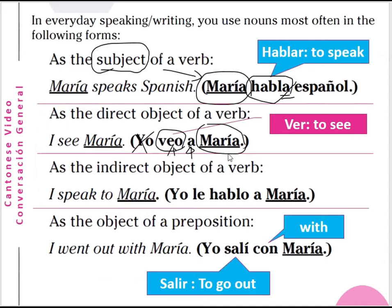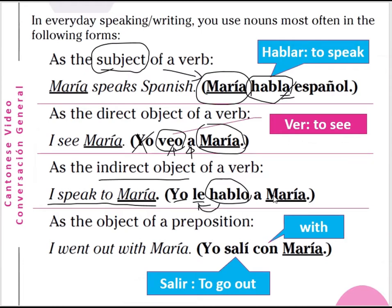As the indirect object: 'I speak to María' — María is the indirect object. Yo le hablo a María. Le here means her or him. Yo is I — I speak to her, but who is she? She is María. In Spanish you can say yo le hablo and omit a María. But if you want to emphasize that I speak to María, you add a María: yo le hablo a María — literally, I speak to María.